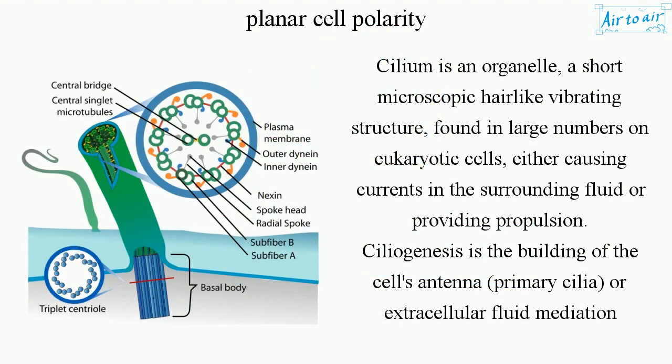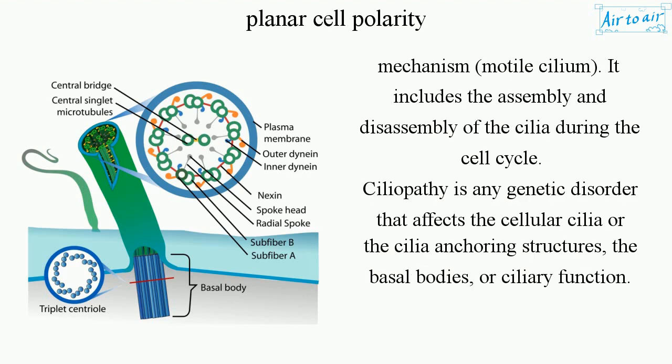A cilium is an organelle — a short, microscopic, hair-like vibrating structure found in large numbers on eukaryotic cells — either causing currents in the surrounding fluid or providing propulsion. Ciliogenesis is the building of the cell's antenna, primary cilia, or extracellular fluid mediation mechanism. It includes the assembly and disassembly of cilia during the cell cycle.